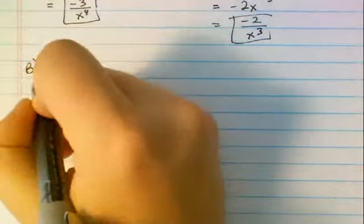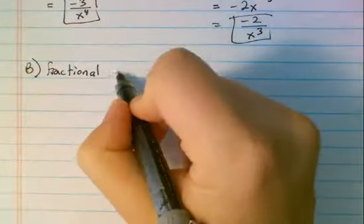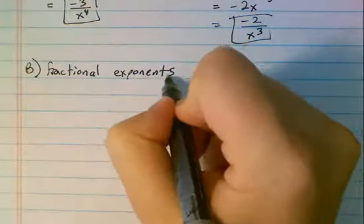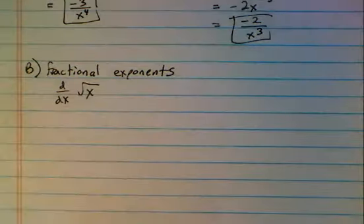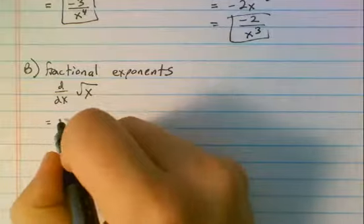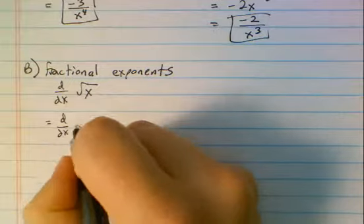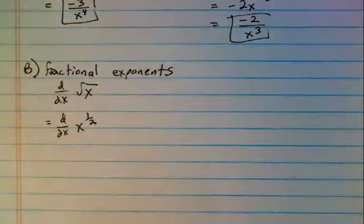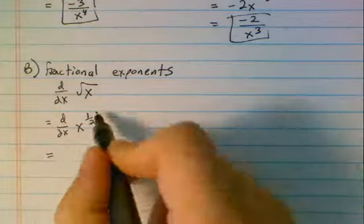Another thing that sometimes trips people up are fractional exponents. Let's say we're in a situation where we're trying to take the derivative of the square root of x. This is again where you have to be able to rewrite. The square root of x is the same thing as x to the 1 half. As soon as we have this, we're able to use our power rule. Bring down the 1 half.